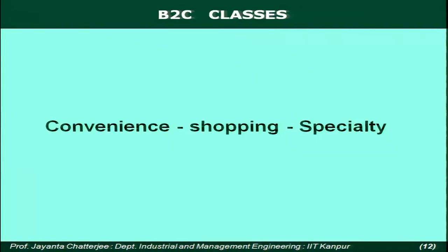Another class we have to look at in B2C is the three classifications: convenience, shopping, and specialty. Convenience products we often also call staple products. Staple products are products that you consume every day — these are mostly products that go towards our subsistence. Food products and beverages are good examples of convenience products.